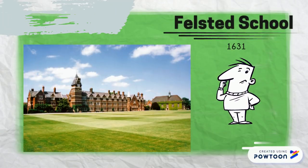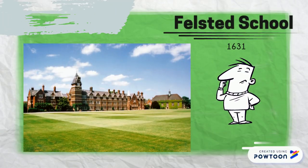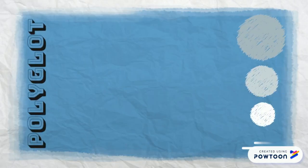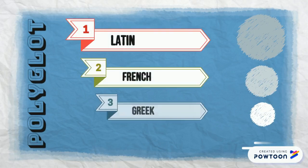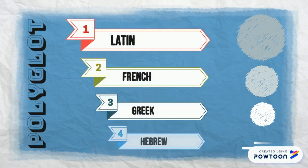He was first exposed to mathematics in 1631 at Felstead School. At the school, Wallis learned how to speak and write in Latin, and was also proficient in other languages such as French, Greek, and Hebrew.